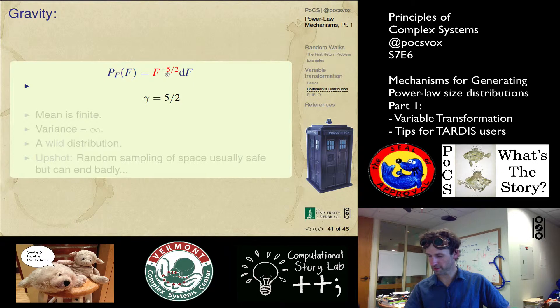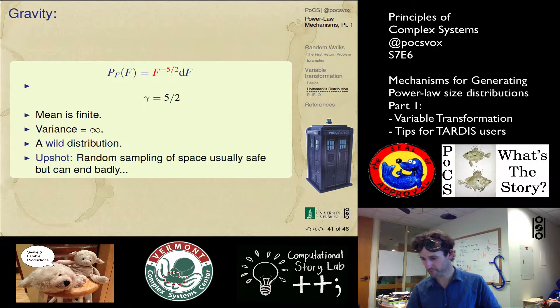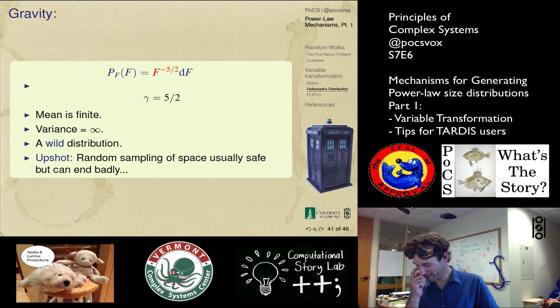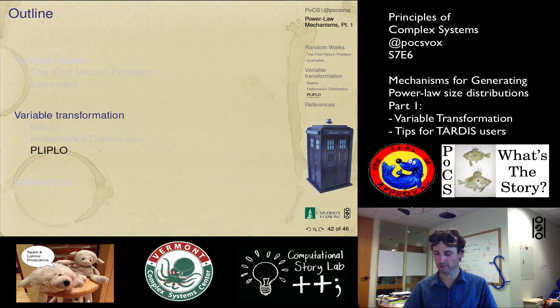We want to determine the probability distribution for f. Our r gets replaced by f to the minus a half. Dr is f to the minus three halves df. This probability is r squared, so there's going to be f to the minus one, f to the minus three halves, and those things add up to f to the minus five halves. So that's our story. Gamma exponent is five halves. So the mean is finite, the variance is infinite. It's a wild distribution. So be careful. If your TARDIS is not working, it's probably best to get it repaired.